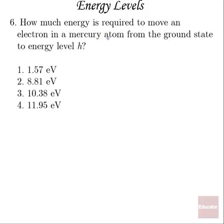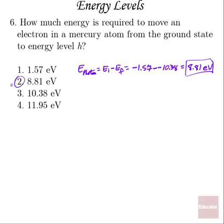Number six, how much energy is required to move an electron in a mercury atom from the ground state to energy level h? So we're going to need the energy level diagram for mercury to do this one, and to do that, remember the energy of a photon is its initial minus its final energy levels, so that's going to be negative 1.57 minus negative 10.38, which is going to be equal to about 8.81 electron volts. And I did those backwards because we're starting at the ground state but going up, and it's absorbing that photon in order to move to energy level h. 8.81 eV, answer number two.